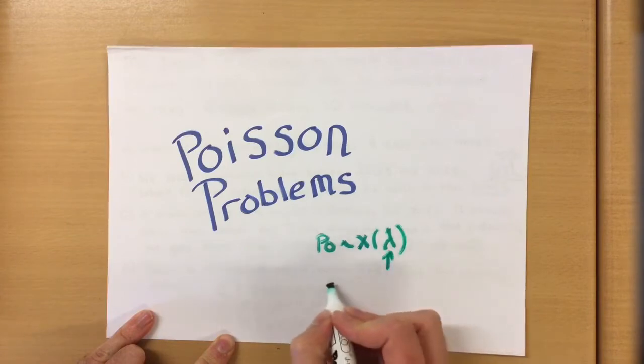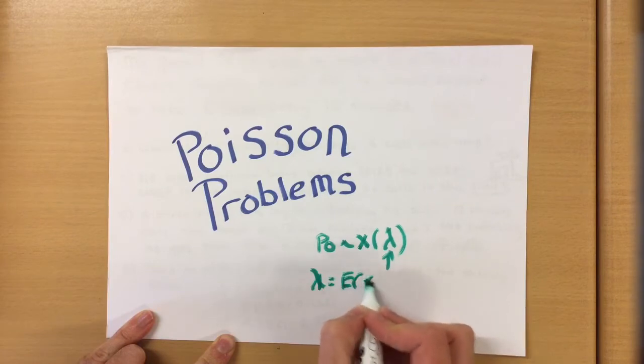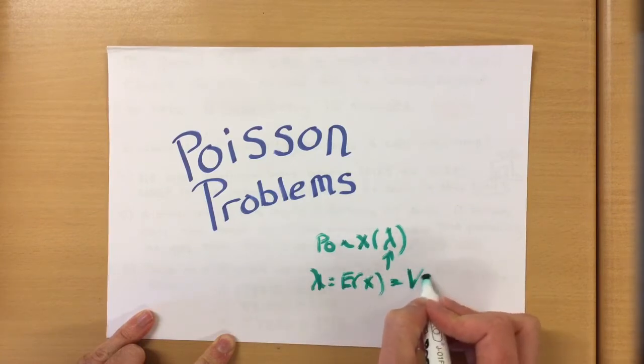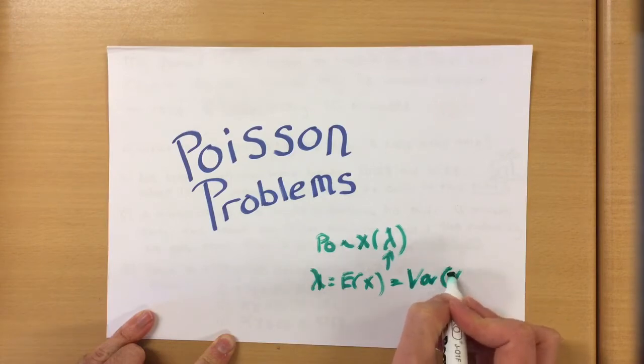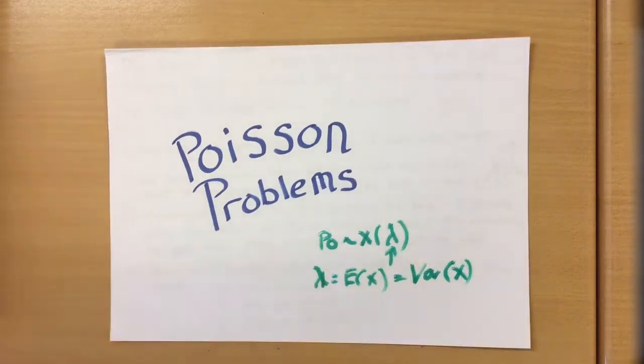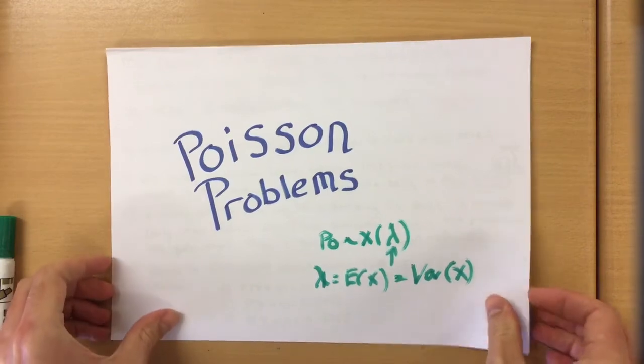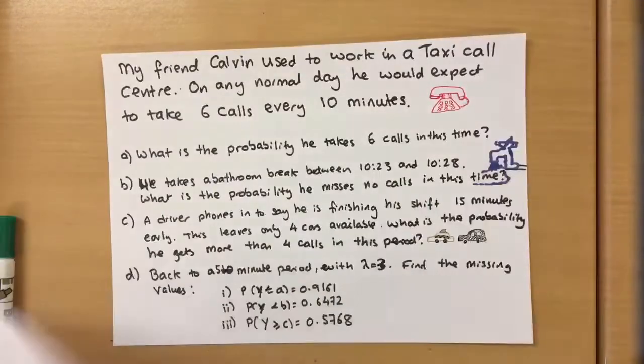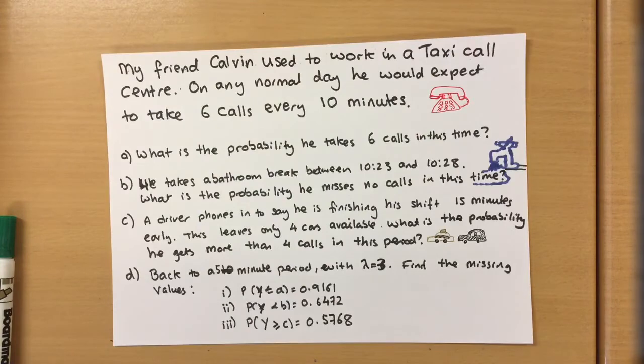Lambda is the mean, and in the Poisson we assume it is also the variance. Now obviously in real life sometimes it's very rare to get exactly the same values. So long as they're kind of close, I mean very very close, you can use a Poisson distribution instead.